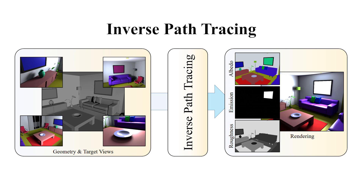We present Inverse Path Tracing, a novel approach for joint lighting and material estimation in a 3D scene. From a set of input views and known geometry, we estimate the material and emission of all objects in the scene.